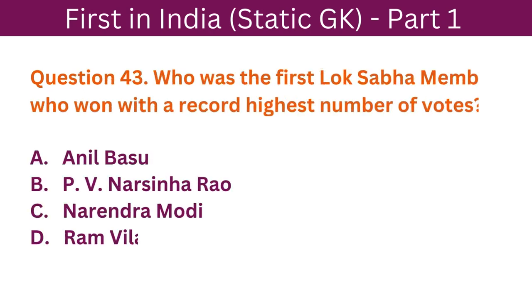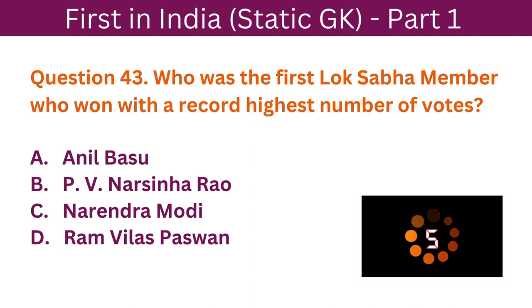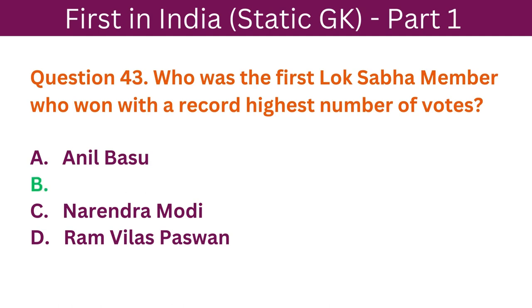Question 43: Who was the first Lok Sabha member who won with the record highest number of votes? A. Anil Basu. B. P.V. Narasimha Rao. C. Narendra Modi. D. Ram Vilas Paswan. The correct answer is B. P.V. Narasimha Rao.